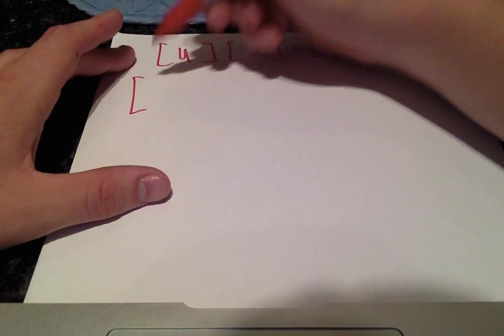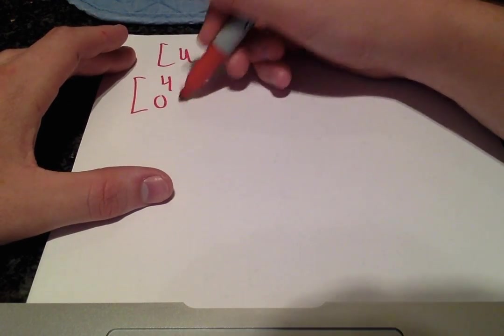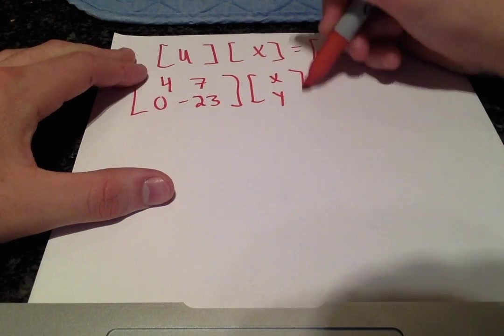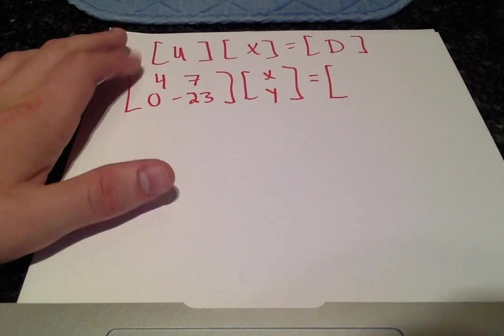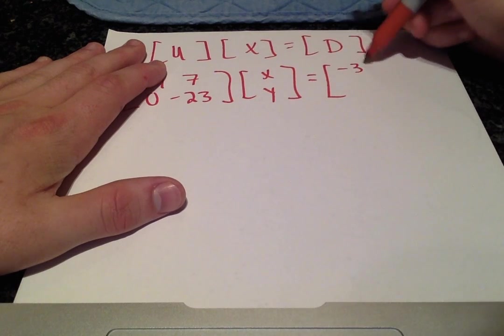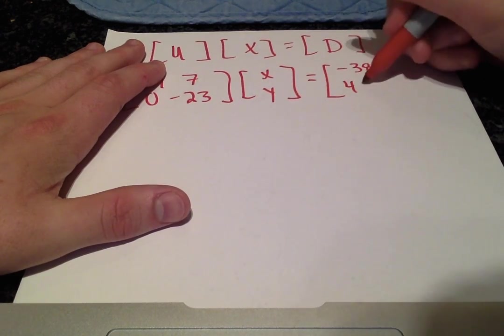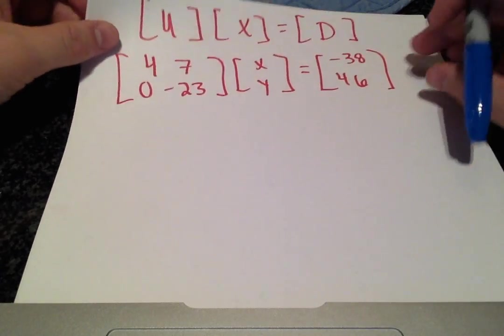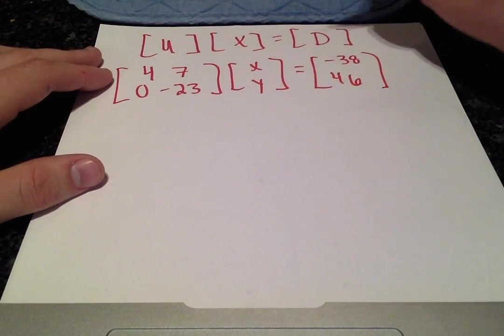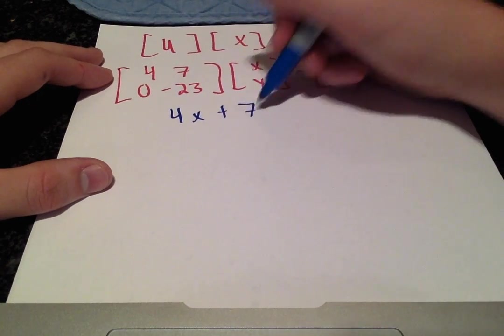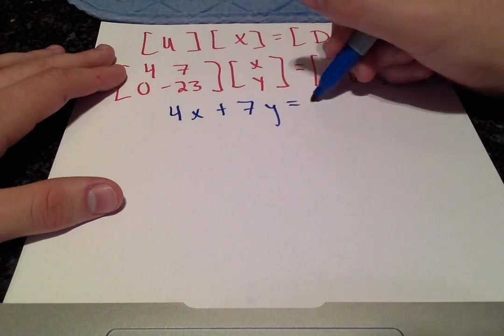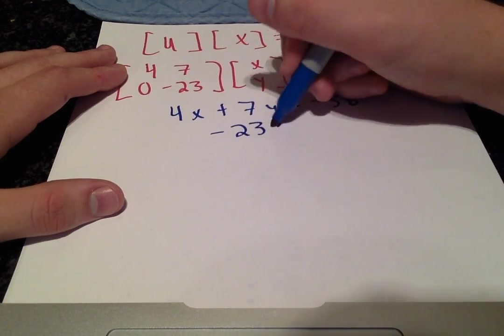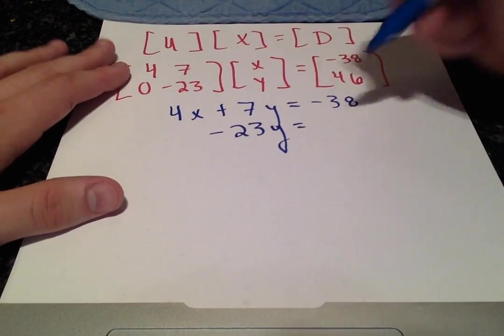The upper matrix, once again, is 4, 7, 0, negative 23, X and Y. And D1, D2, which we just solved for, negative 38 and 46. Let's multiply this out. We'll get 4X plus 7Y is equal to negative 38, and negative 23Y is equal to 46.